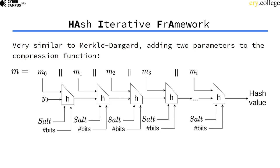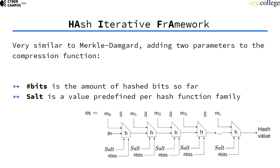The HAIFA framework — Hash Iterative Framework — is very similar to the Merkle-Damgård construction. It just adds two parameters: namely the salt value and the number of bits already consumed. The number of bits refers to those already hashed, and the salt value is a predefined value that you can set per hash function family.